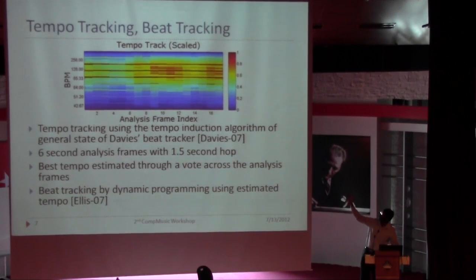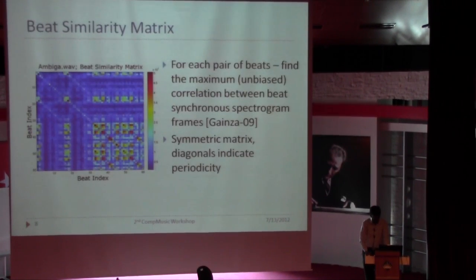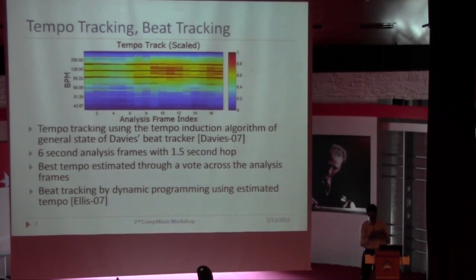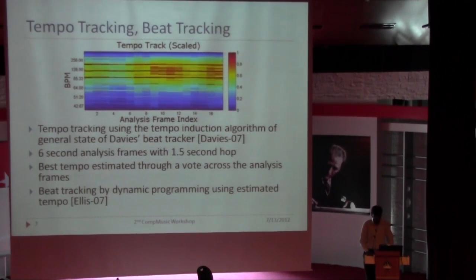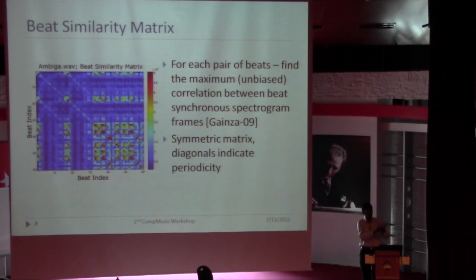Once we have a tempo track, we obtain a single tempo value for the song, which could be easily changed to account for variable tempo by doing a dynamic programming trace through the entire tempo track. We then do beat tracking using a dynamic programming approach with a cost function of continuity, disallowing beats totally out of the continuous pulse, based on onset strengths — this is what was proposed by Ellis. Once we have the beats, we chop the spectrogram at those beat locations and compute a beat similarity matrix by comparing each beat against all other beats.